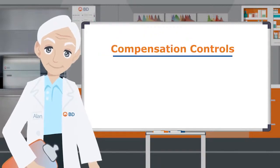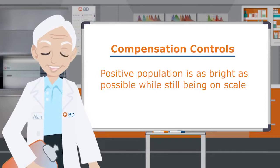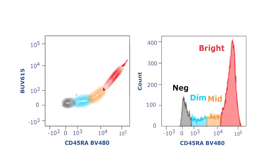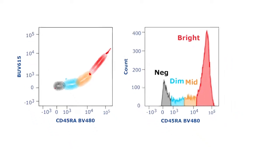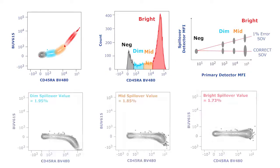The last principle requires that the positive population is as bright as possible while still being on scale. If you are using cells stained with a reagent with a broad range of fluorescence, as shown here with CD45RA, gate on the bright population, as shown in red, as your positive population. Errors in the spillover calculated from using dimmer cells are magnified at higher MFI. Correct compensation is best achieved when spillover values are calculated from the brightest population.